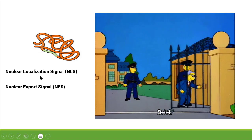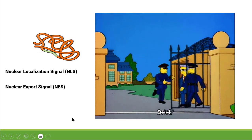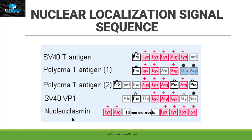The nuclear localization signal sequence basically contains basic amino acids, or positively charged amino acids. As you can see in this picture, we have five different proteins that enter inside the nucleus, and all of their signal sequences contain lysine and arginine, which provide the positive charge to that signal sequence.